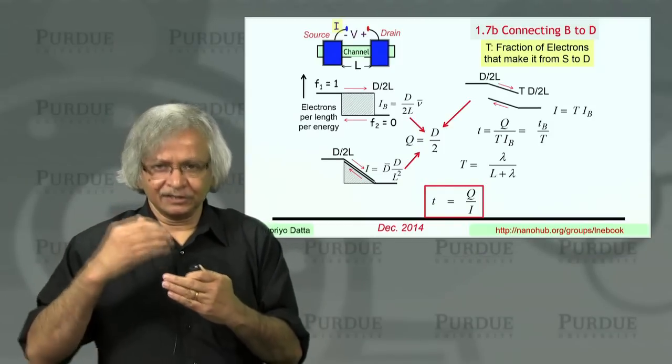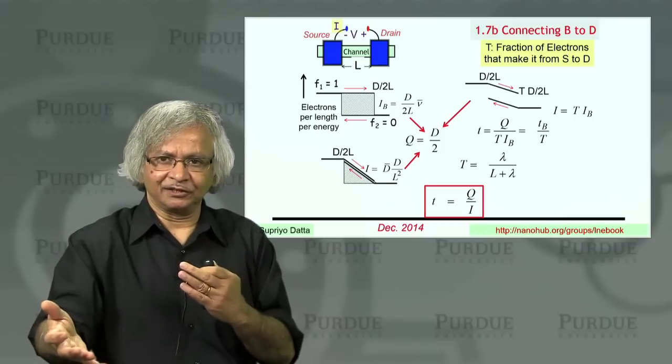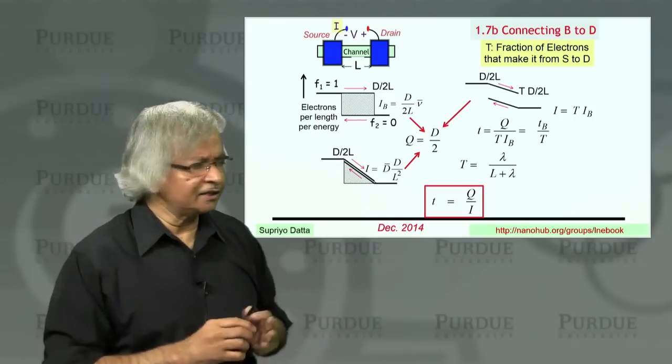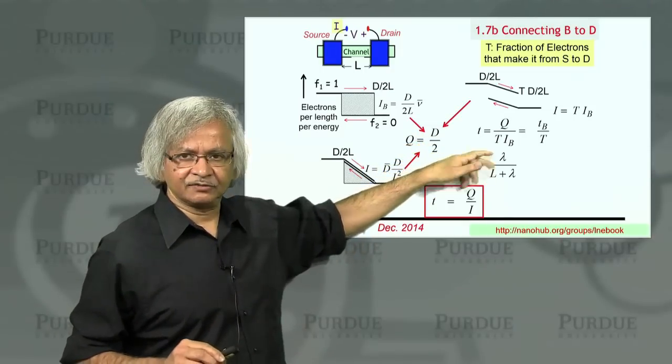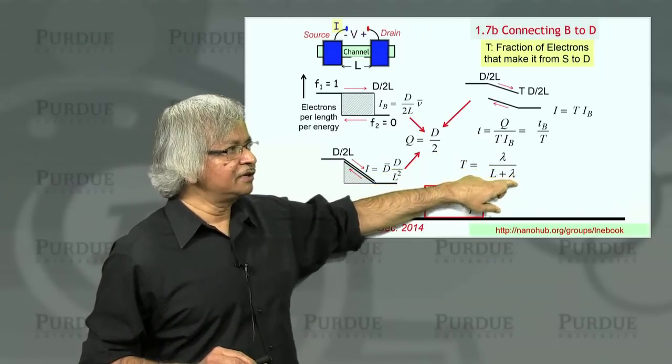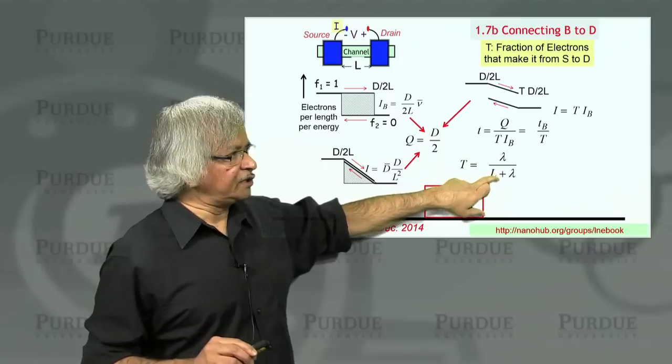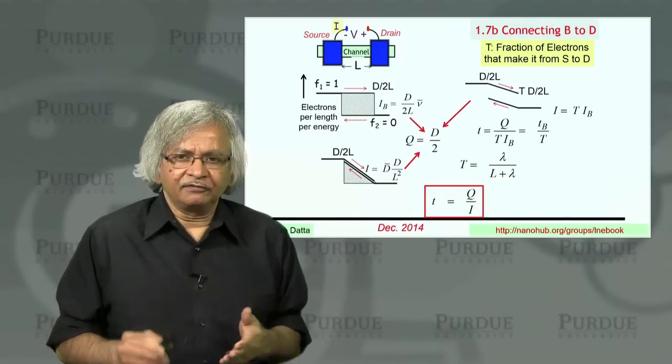Of course, you could have defined it as the length for which 30 percent get through, or 60 percent get through. The conventional definition is not exactly this. We have chosen this definition because that way, this expression comes out nicely, like lambda over L plus lambda. Whereas if you have chosen a different definition, you might have got 1.5 lambda over L plus 1.5 lambda.